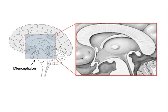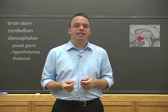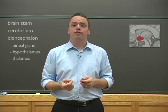In addition to the pineal gland, the diencephalon also includes a small, very important structure called the hypothalamus. The hypothalamus is involved in many regulatory functions. Most importantly, it's heavily involved in the maintenance of homeostasis.